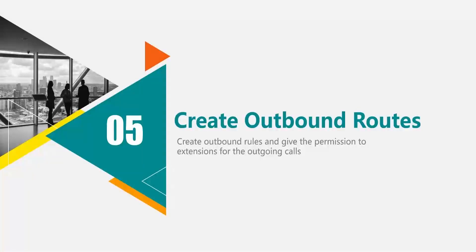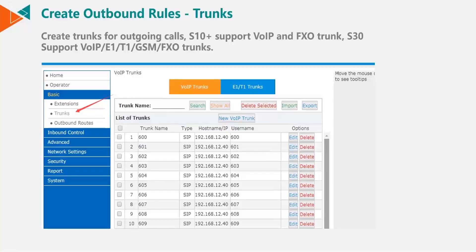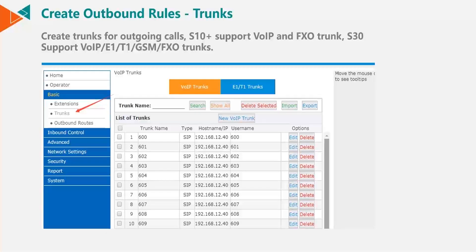To make outbound calls, we need to create outbound rules. In addition to outbound rules, we also need to create permissions for extensions to be able to use those rules. To make an outbound call, we need to have a trunk in place. The S10 Plus supports VoIP and FXO trunks, and the S30, dependent upon what module is inserted, supports VoIP, E1, T1, GSM, and FXO trunks. Trunks can be configured from within the trunk section.